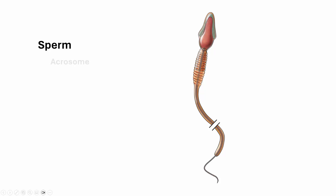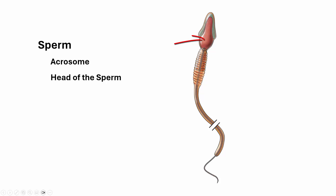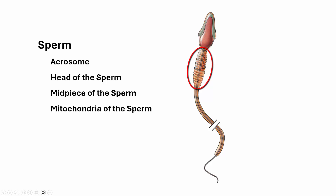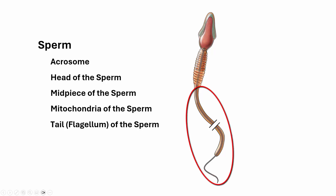Here we have the sperm. The acrosome is this little cap here, containing an enzyme. The head of the sperm is followed by the mid piece, which contains the mitochondria. And then we have the tail of the sperm. I hope this helps.